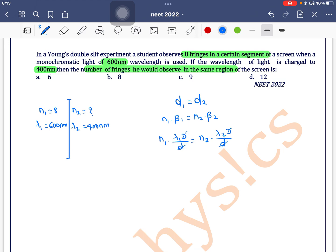This d, D cancel out. n1 is 8, lambda is 600 nanometer. n2 is we do not know, lambda 2 is 400 nanometer. This nano nano gate cancel out, 0 0 gate cancel out, 4 into 2 is 8.